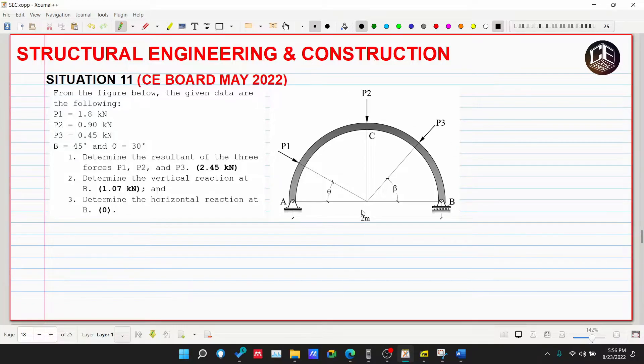Mapapansin natin dito this is not a three hinge arch. This is an arch, pero ang kanyang support is isang pin and isang roller, so this is a simply supported arch. Ibig sabihin we don't need to isolate the members kasi there is only one member and this is the member ADB.